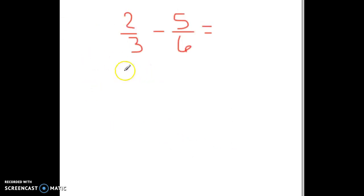On our next problem, it's two-thirds, and we're going to change it from minus to plus. And five-sixths will go from positive five-sixths to negative five-sixths, and I'm going to put that in parentheses to help show that.